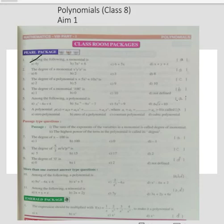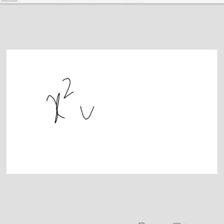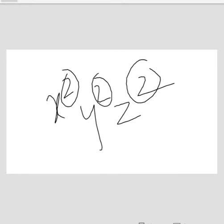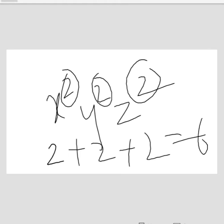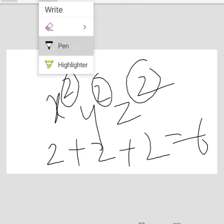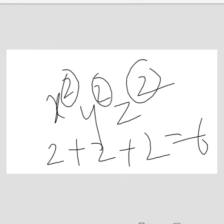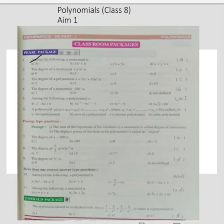Then, the degree of monomial. What is the monomial? X squared, Y squared, and Z squared — we have to find the degree. Finding the degree is very simple. These powers, whatever are there, just add up: 2 plus 2 plus 2, which adds up to 6. So the answer is 6, option A.